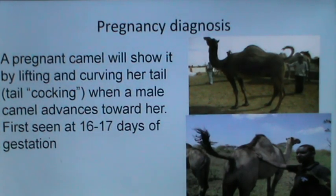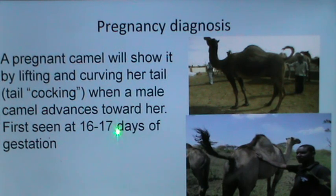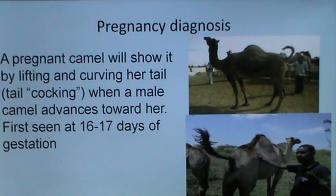For pregnancy diagnosis, most breeders rely on the peculiar behavior of the pregnant female — the cocking of the tail. A pregnant camel lifts and curves her tail when a male advances towards her, first seen at 16 to 17 days of gestation, and this continues for most of the gestation period. This is considered by camel breeders to be a perfect sign of pregnancy.